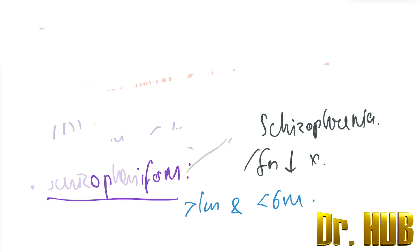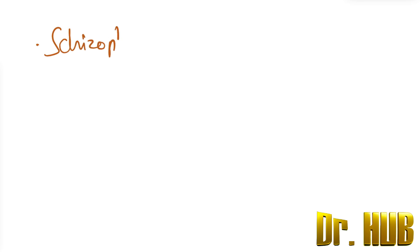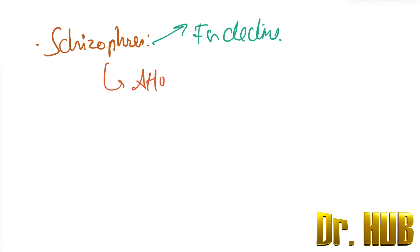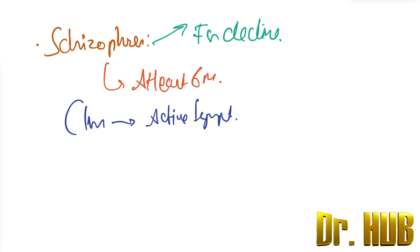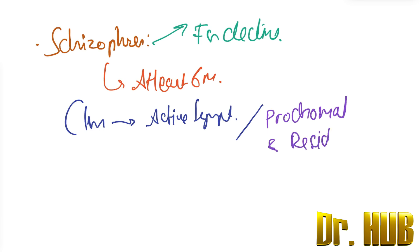Next is Schizophrenia, which requires a functional decline. The duration is at least six months, which includes at least one month of active symptoms. It can also include prodromal as well as residual periods.